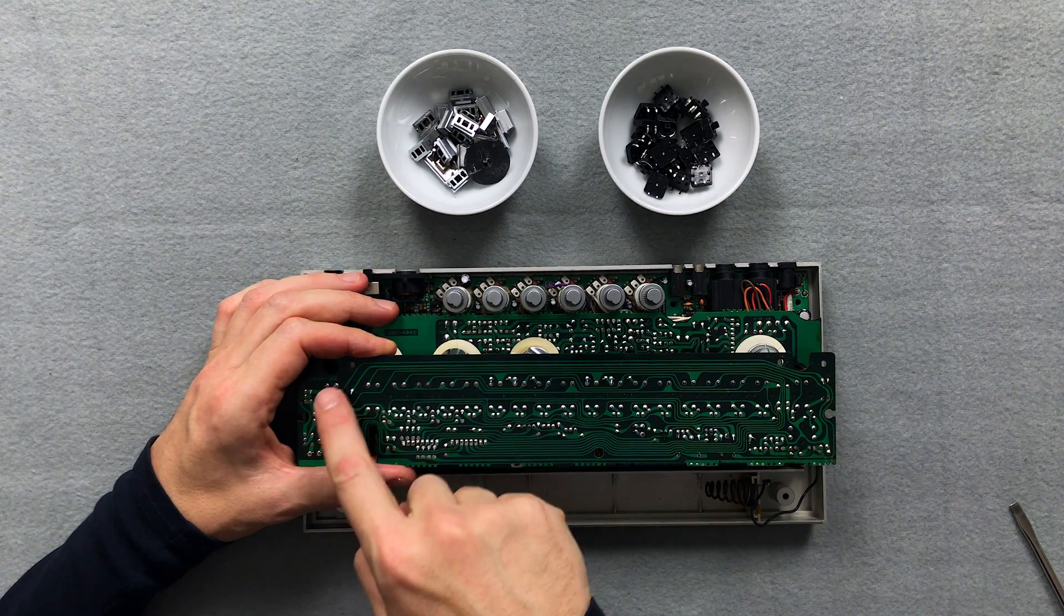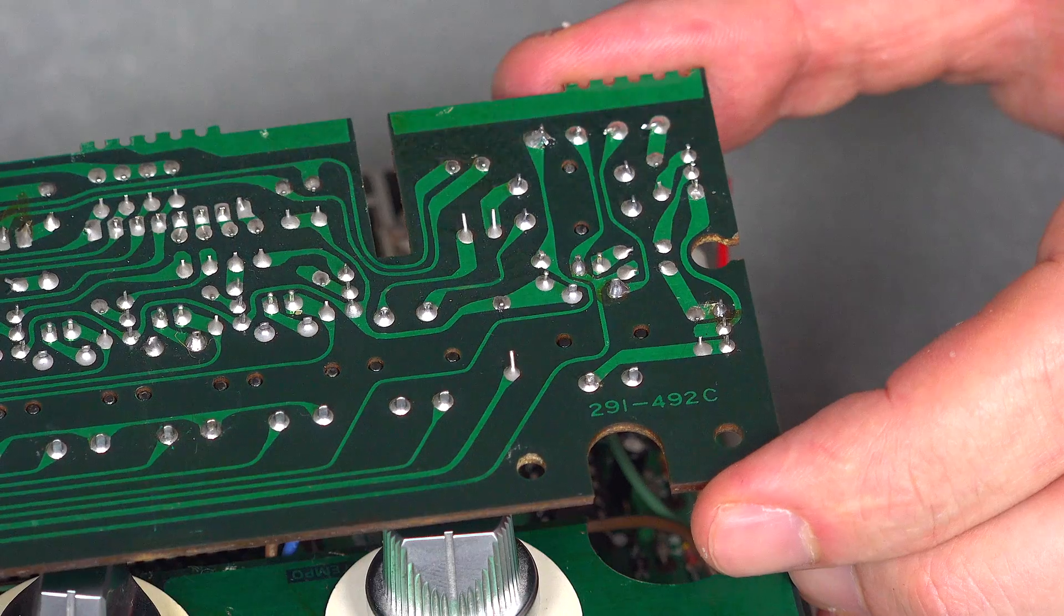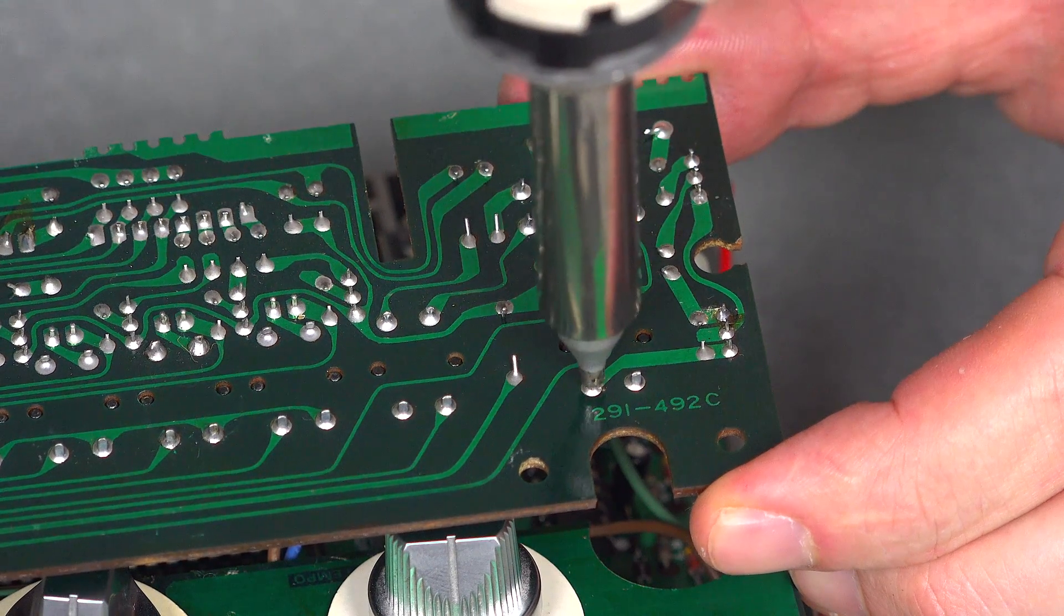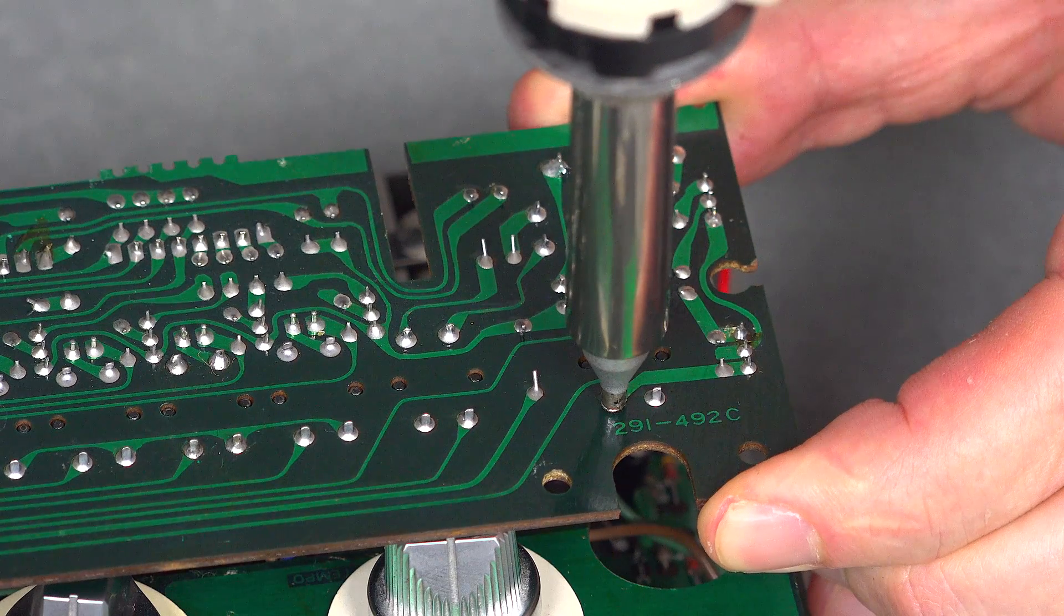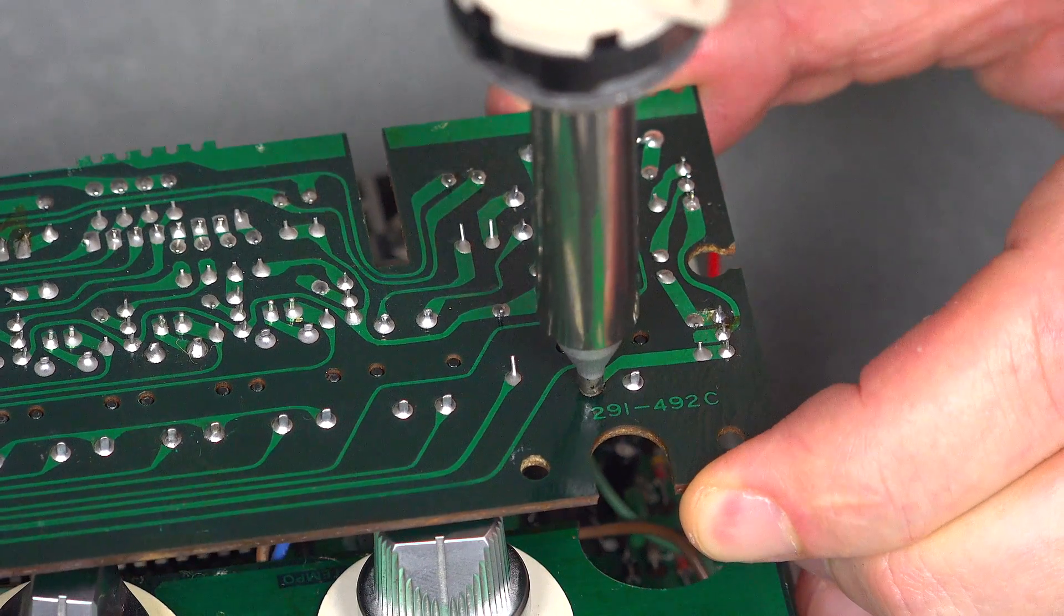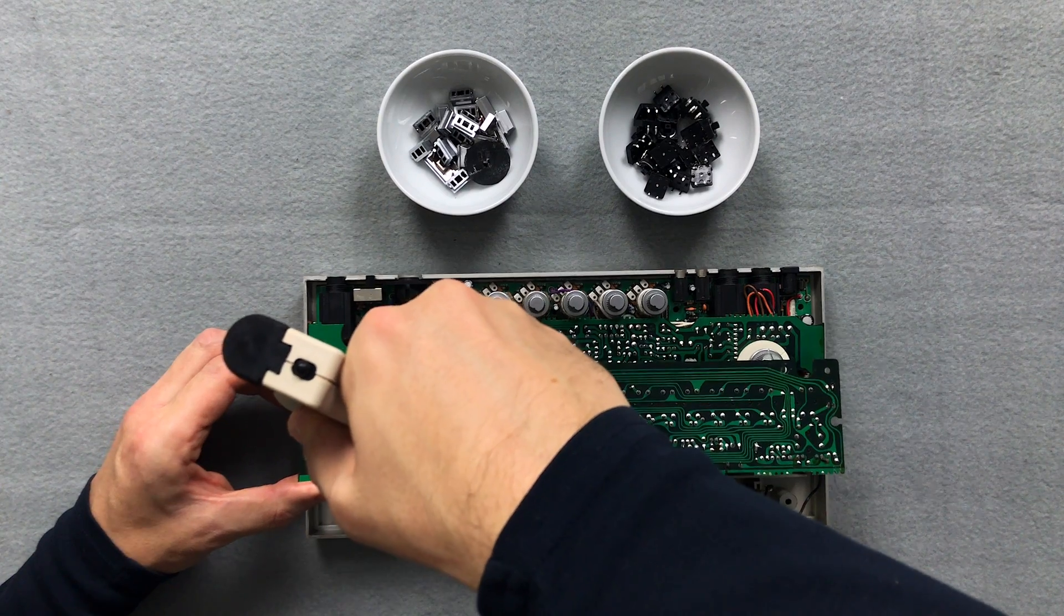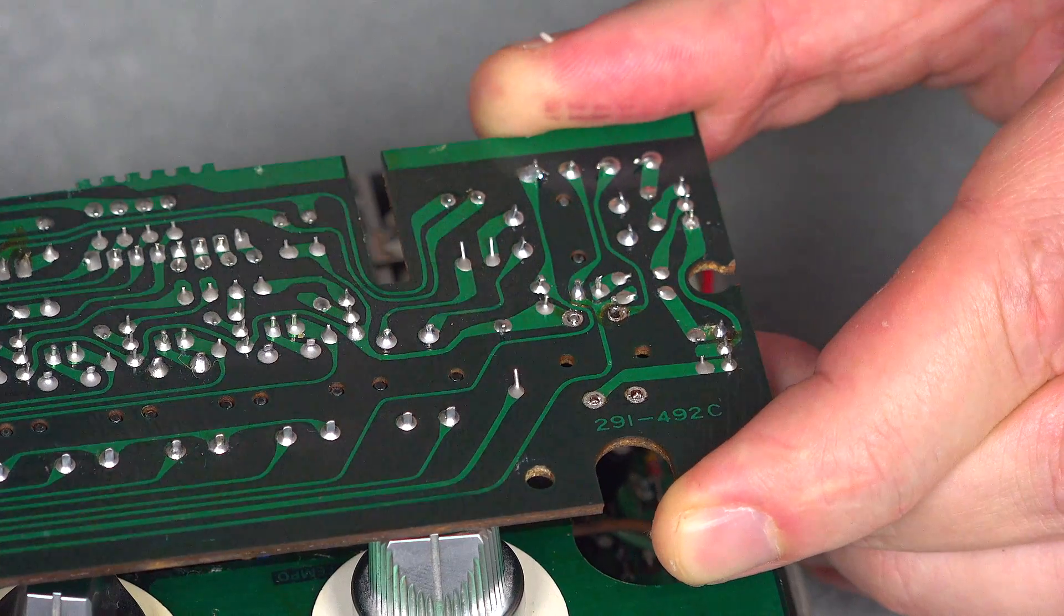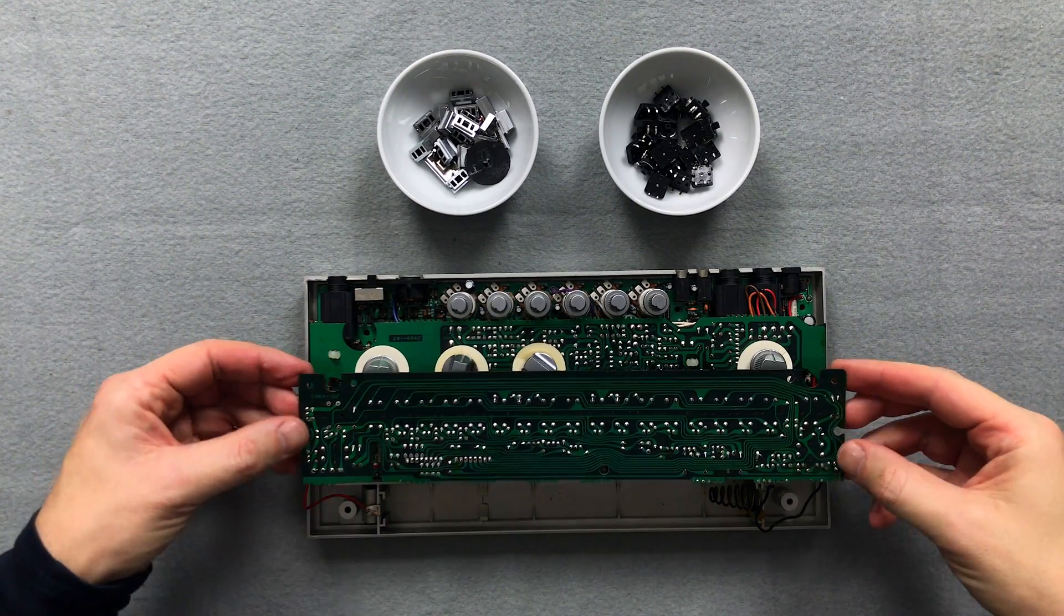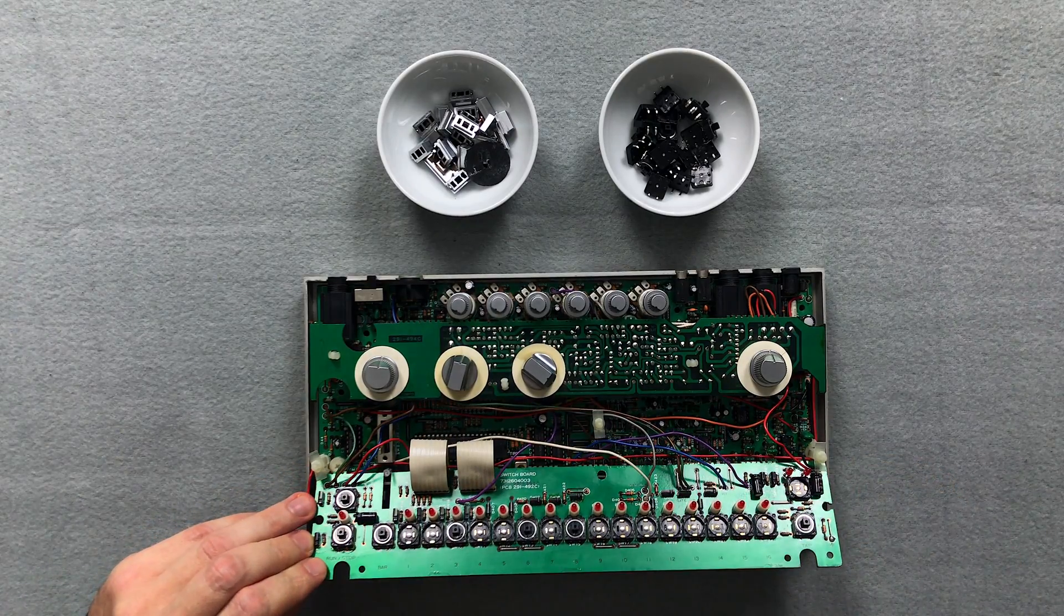Now I'll carefully desolder all soldering points of the push buttons. After all buttons are desoldered, I can easily remove them from the PCB.